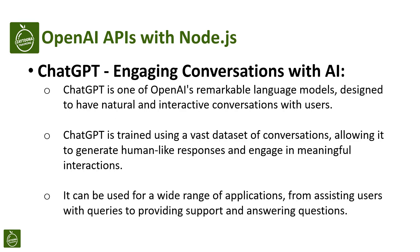Now that we have a better understanding of OpenAI as a visionary company, let's explore the incredible AI models they have created, starting with ChatGPT. ChatGPT is one of OpenAI's remarkable language models, designed to have natural and interactive conversations with users. ChatGPT is trained using a vast dataset of conversations, allowing it to generate human-like responses and engage in meaningful interactions.